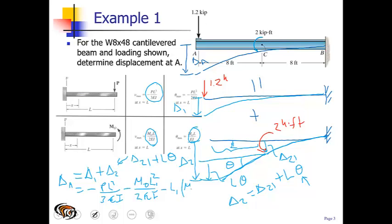If we substitute the values for E and I, E for this case is going to be 29,000 ksi. We also have to look up the moment of inertia for this case.